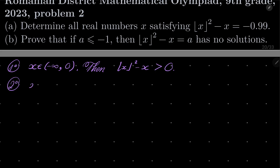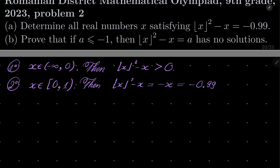Second case: x between 0 and 1. Notice that floor of x squared minus x — floor of x is 0 in this case, so it's minus x — and we see that it equals minus 0.99 if and only if x equals 0.99. So we have one solution already.